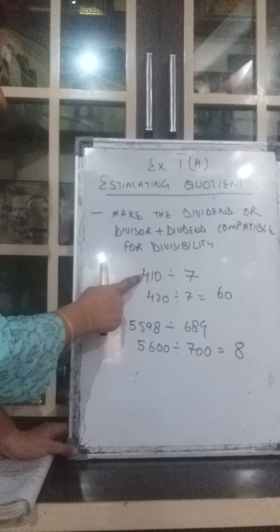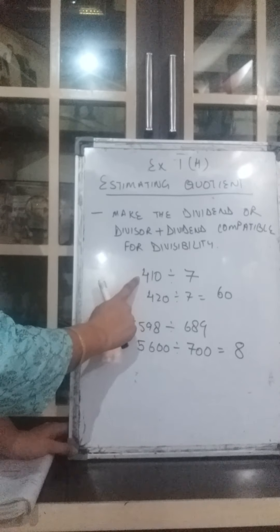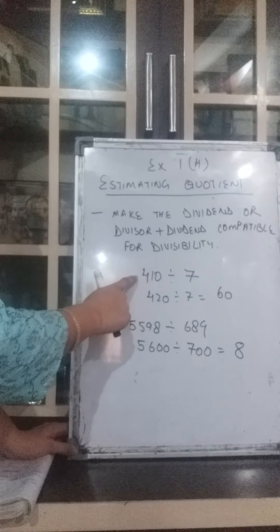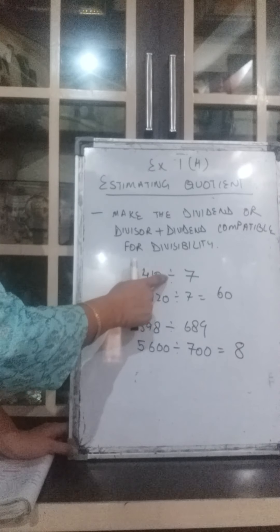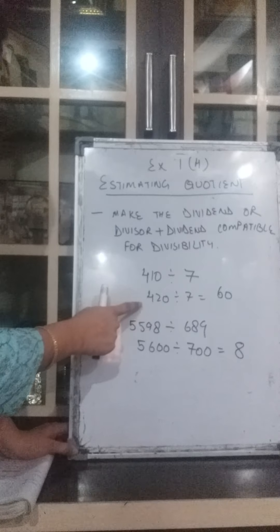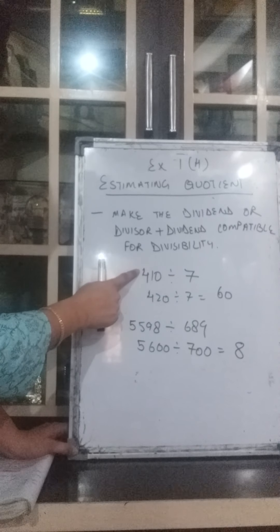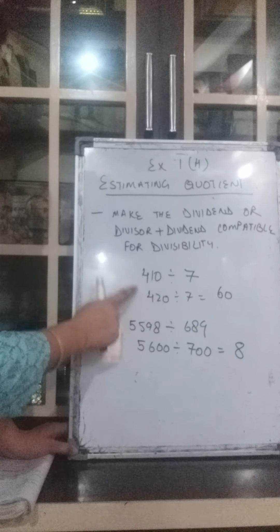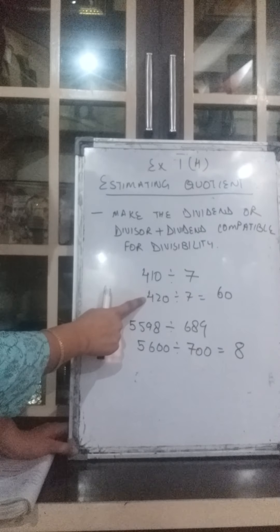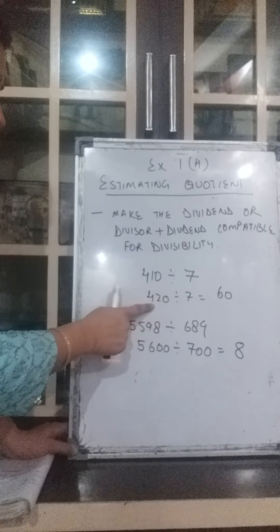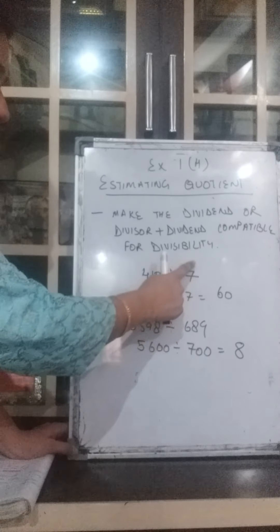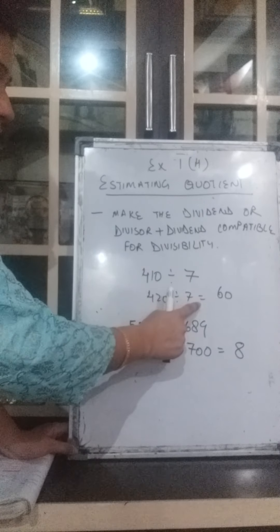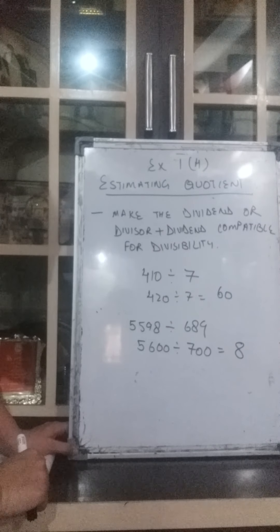Suppose it is given 410 divided by 7. We know that 410 cannot be divided by 7 — it will not give a whole number. So we will convert only the dividend into a number which is close to it and which can be easily divided by 7. The number close to 410 is 420. 420 can be divided by 7, and here we have not changed the divisor, only the dividend. So it gives you 60.